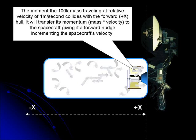The moment the 100 kilo mass traveling at a relative velocity of 1 meter per second collides with the forward hull, it will transfer its momentum to the spacecraft, giving it a forward nudge incremental to the spacecraft's velocity.